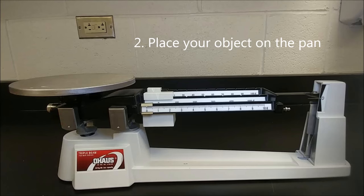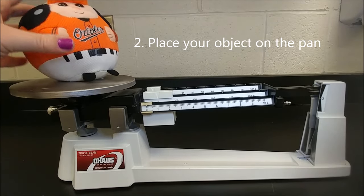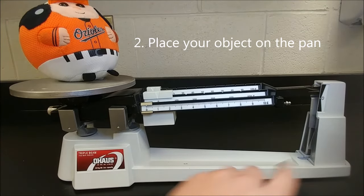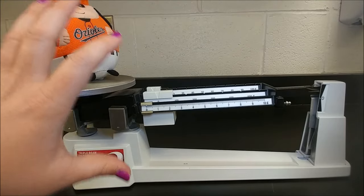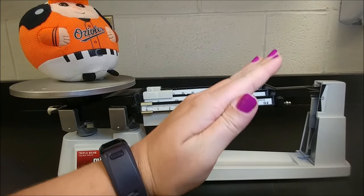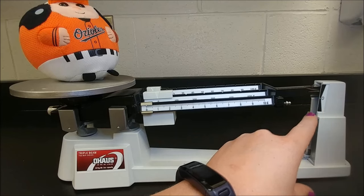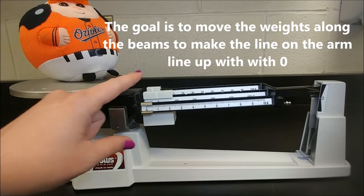When I place the Oriole bird on there, the arm jumps up. This is because there's more mass now on this end, which causes the arm to move up. So I have to get this line to move down. We do that by moving these weights on the bars.